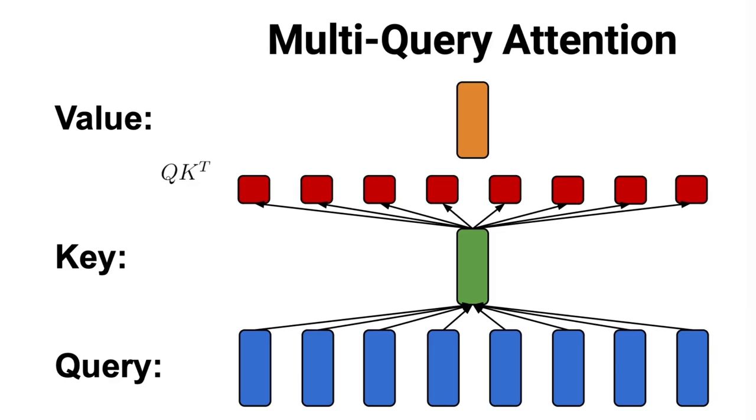Then, we calculate the dot product of all these queries with the same shared key matrix so we get h different products of QK transpose. And then, each of those QK transpose products are scaled as in the original transformer paper. Next, we compute the output head as the softmax of the scaled QK transpose multiplied by the shared value matrix V. And finally, we concatenate the results to get the output of the multi-query attention.